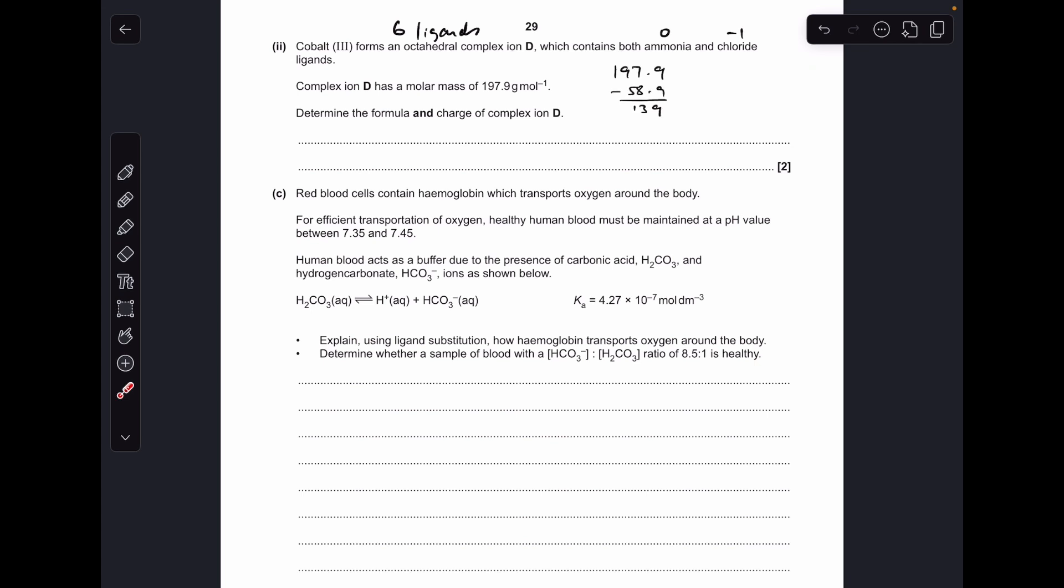To work out the number and type of ligands we've got, we need to subtract the mass of cobalt from the mass of the ion. So we're left with 139 for those six ligands. And then if you think about it, one chloride ligand is 35.5, so the fact that that's a whole number means that we must have an even number of chlorides in the complex.